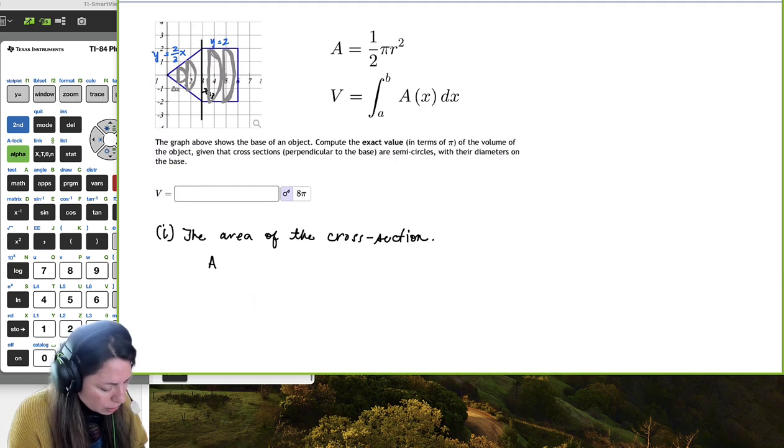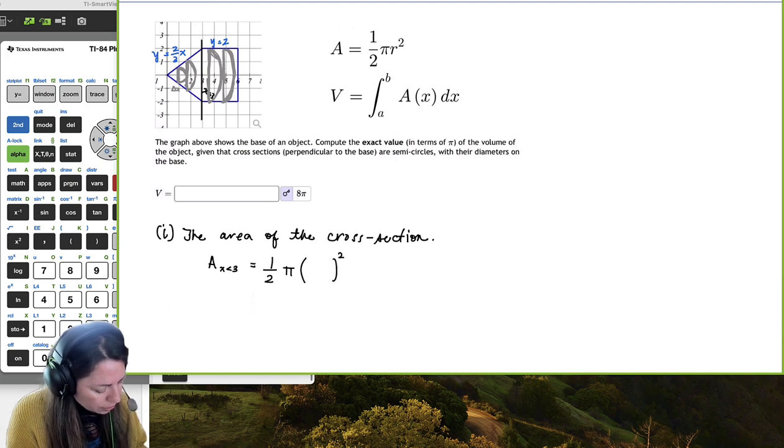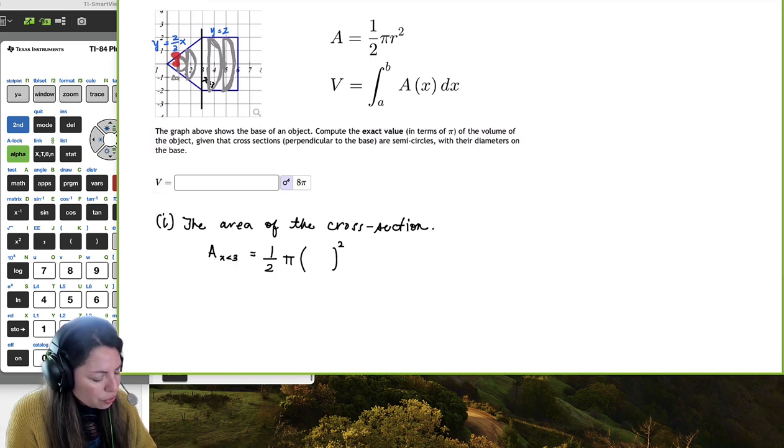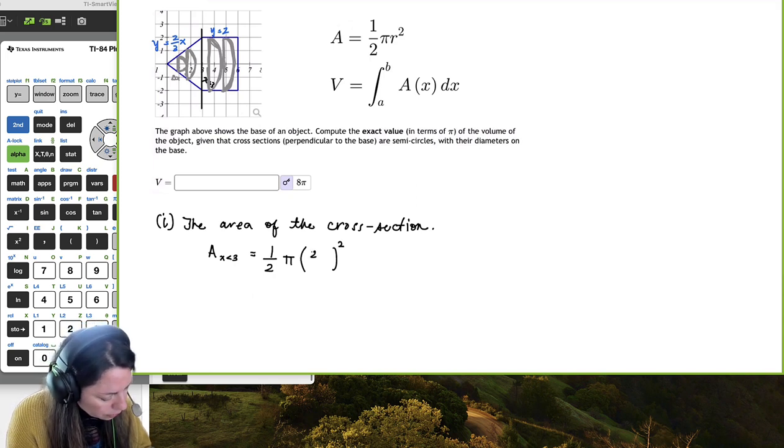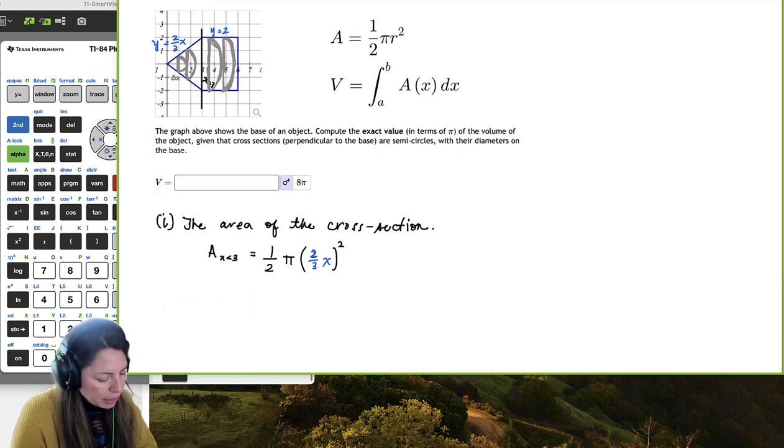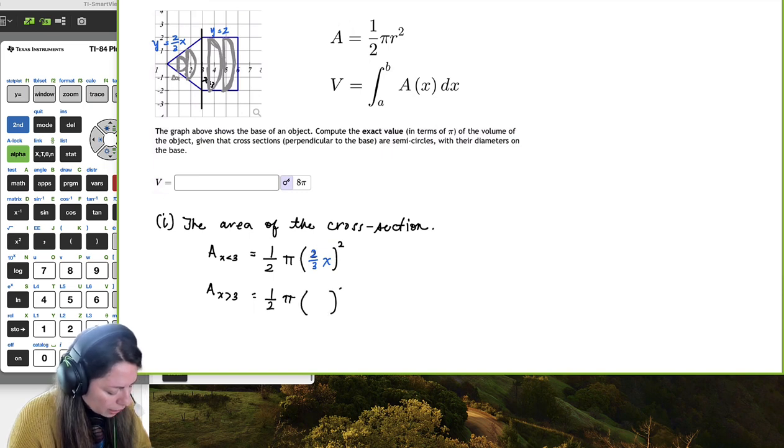Okay, so the area of the cross section when x is less than three, and of course larger than zero, is equal to one-half pi and then the radius squared. So we can see that the radius here is going to be from that x-axis up into that line. Okay, so two-thirds x. And that will give us the entire area of the semicircle.